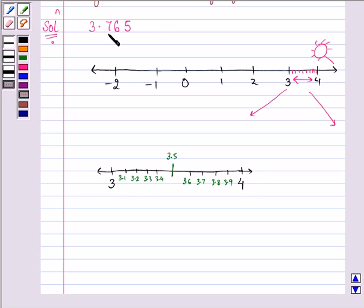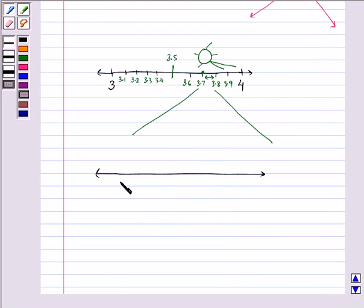Now, the point is 3.765. So that means it will again be lying between these two points. So on this, we again magnify using our magnification glass. It will be between 3.7 and 3.8.